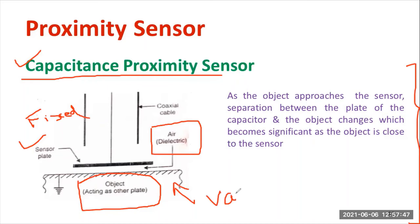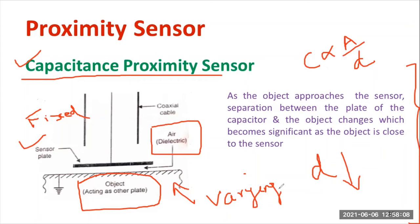The object plate is usually varying. Suppose the object plate is nearby the sensor plate — the gap distance will be reduced. As we know, capacitance C is proportional to A divided by d. So as the distance decreases, the capacitance increases. When the capacitance value increases, we can understand that the object is very near to the sensor. This is how the capacitive type proximity sensor operates to identify the presence of an object.